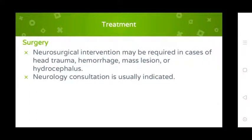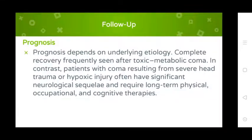Treat the underlying etiology of coma with special therapy. Physical therapy to maintain joint range of motion in comatose patients and during recovery should be implemented. Surgery: neurosurgical intervention is required in cases of head trauma, hemorrhage, mass lesion, or hydrocephalus. Neurology consultation is usually indicated. Prognosis depends on underlying etiology. Complete recovery is frequent after toxic-metabolic coma, in contrast with coma resulting from severe head trauma or hypoxic injury, which may result in significant neurological sequelae and require long-term physical, occupational, and cognitive therapy.